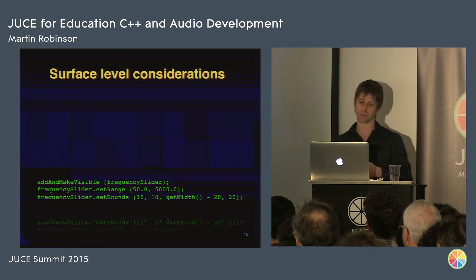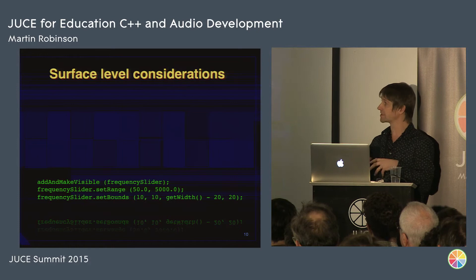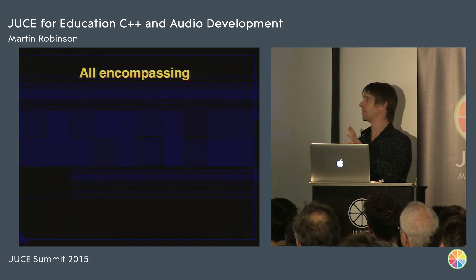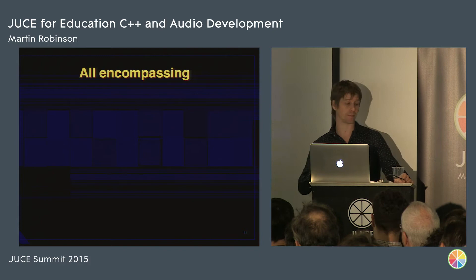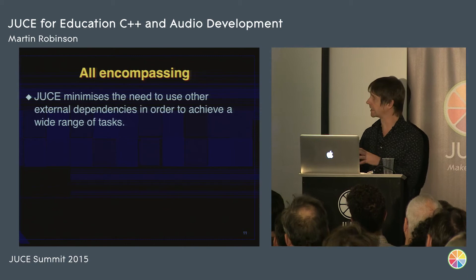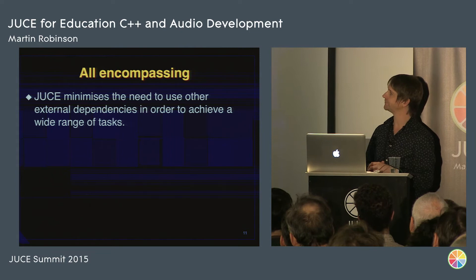The internal code formatting is clear as well, so understanding how functions work — not just how to use them — is also a useful factor. It's pretty much all-encompassing. It completely minimizes the need for external dependencies. When it does have external dependencies like Zlib, they're embedded within the library itself and you don't need to include them manually. You can do a whole load of stuff without having to include separate frameworks or libraries.